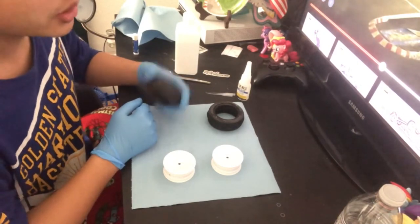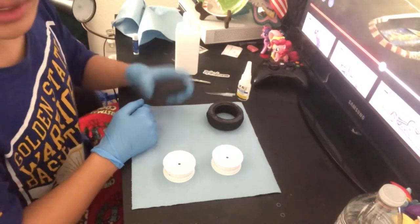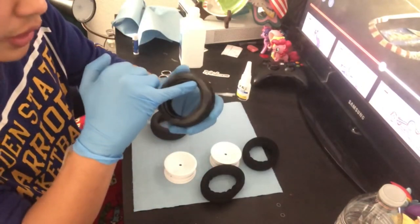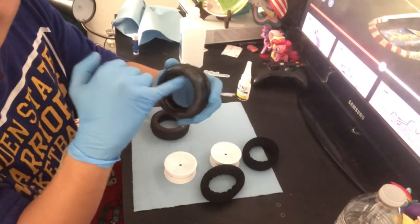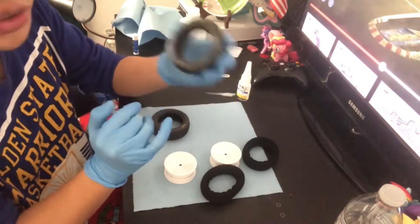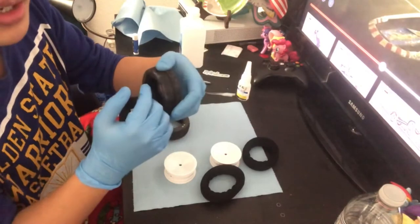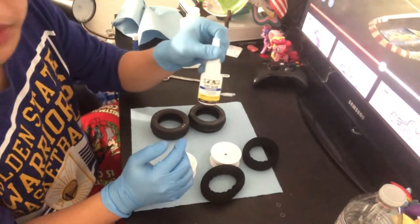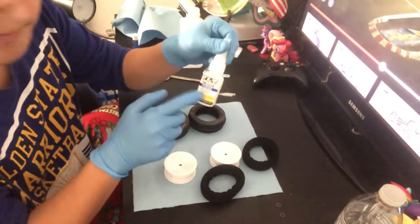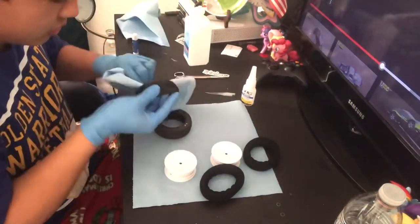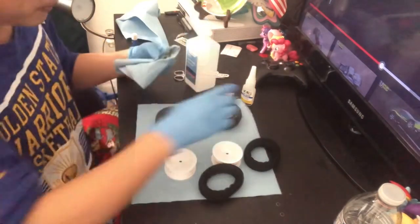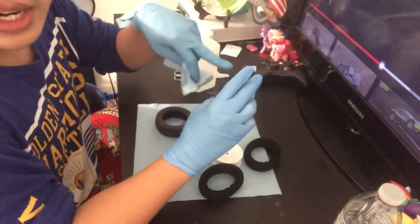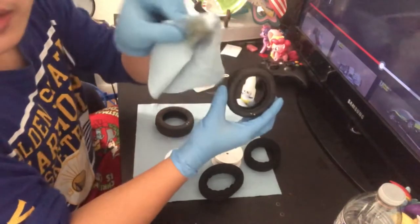Rubbing alcohol is to wipe down this bead area, because if you don't do that, you're not going to have a perfect adhesive. Plus, tire glue actually bonds pretty fast. I pretty much wiped down both sides of the tire bead.